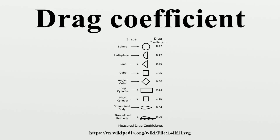Drag, in the context of fluid dynamics, refers to forces that act on a solid object in the direction of the relative flow velocity. The aerodynamic forces on a body come primarily from differences in pressure and viscous shearing stresses. The drag force on a body can be divided into two components: frictional drag and pressure drag. The net drag force is decomposed in terms of pressure drag coefficient, friction drag coefficient, shear stress acting on the surface, and the pressure difference between the far field and the surface.